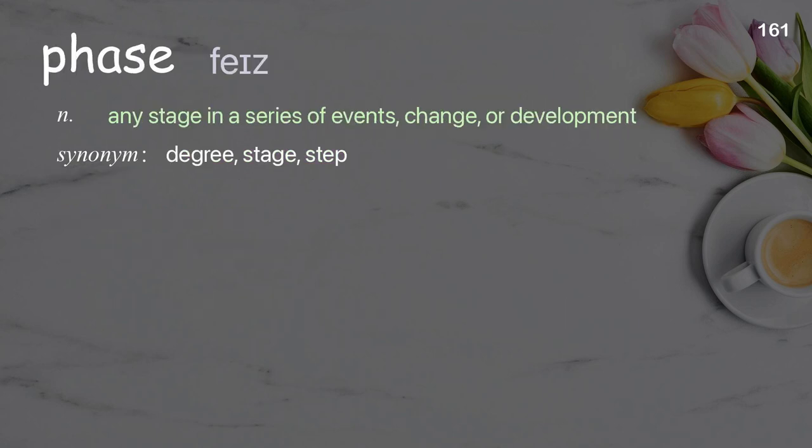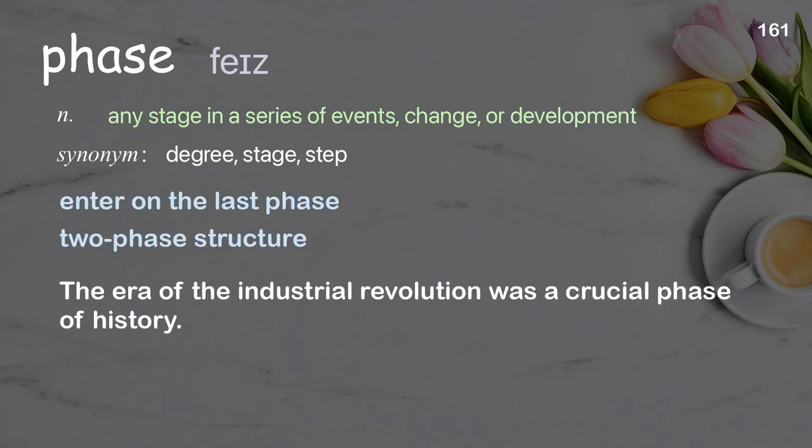Phase: any stage in a series of events, change, or development. Examples: enter on the last phase, two-phase structure. The era of the industrial revolution was a crucial phase of history.